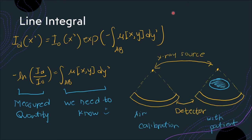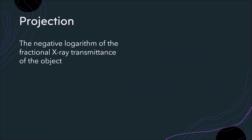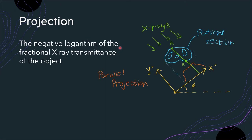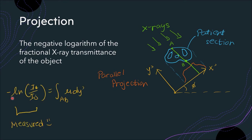The left-hand side of this expression refers to our measured quantity. Given that we know the value of I sub D coming out from the patient, and we have the value of I sub 0 taken from the CT's air calibration. Using the mathematical expression shown earlier, we can define projection as the negative logarithm of the fractional x-ray transmittance of the object.